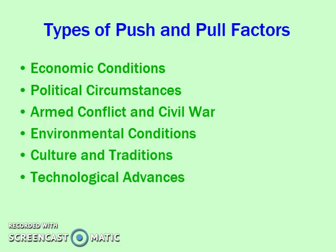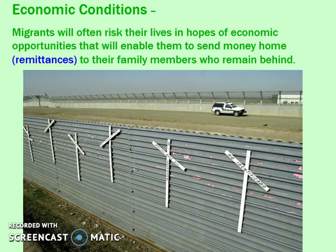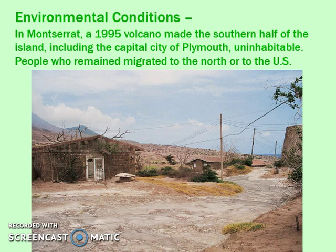It's important to connect these catalysts with specific historic examples. The Bracero program was an agreement between the United States and Mexico where Mexicans could go as guest workers in the United States and send home money called remittances to their families in Mexico — an economic pull factor to the US and also a push factor out of Mexico due to fewer well-paying jobs there. For environmental conditions, Montserrat's volcano erupted in 1995, causing people to migrate out, and they never really went back — a push factor out and a pull factor to stay in the north.